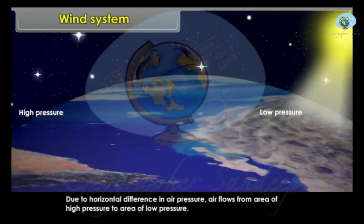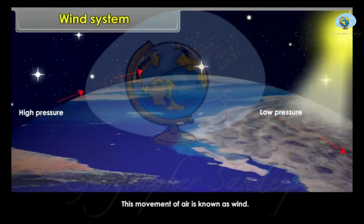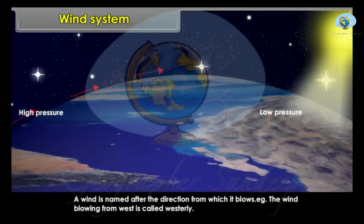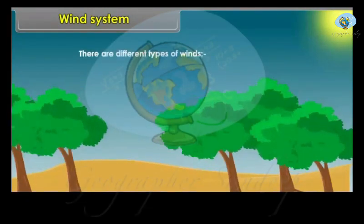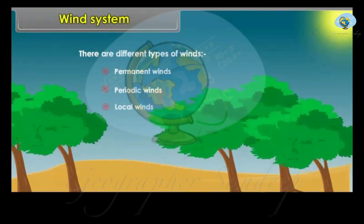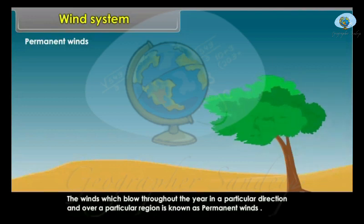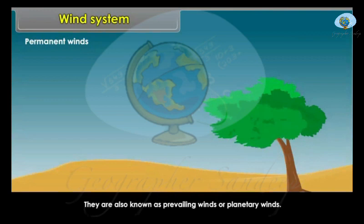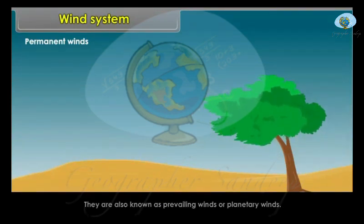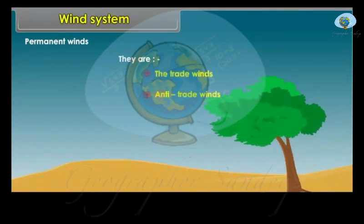Wind System. Due to horizontal difference in air pressure, air flows from area of high pressure to area of low pressure. This movement of air is known as wind. A wind is named after the direction from which it blows — for example, the wind blowing from the west is called a westerly. There are different types of winds: permanent winds, periodic winds, and local winds. Permanent winds blow throughout the year in a particular direction over a particular region and are also known as prevailing winds or planetary winds. They are the trade winds, anti-trade winds, and polar winds.